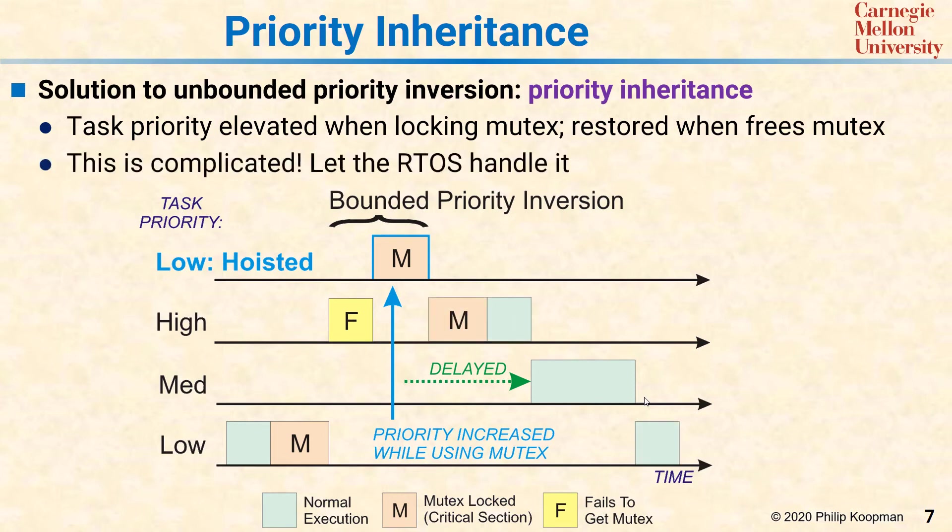It gets reverted back down to its normal priority and the high priority task can now grab the mutex it was waiting for and run. It keeps running even after it releases the mutex because it is higher priority than the medium priority task.